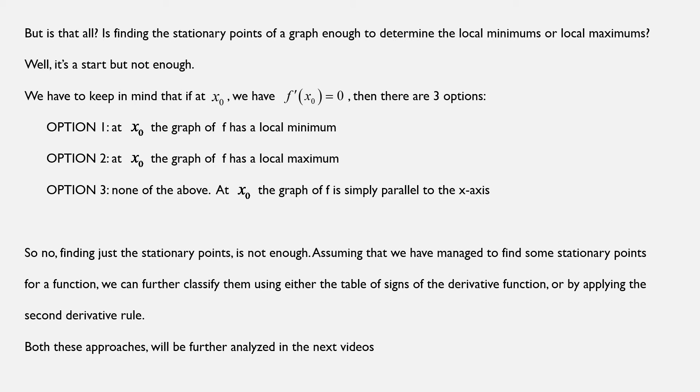But is that all? Is finding the stationary points of a graph enough to determine the local minimums or local maximums? Well, it's a start, but not enough. We have to keep in mind that if at x₀ we have f'(x₀) equals 0, then there are actually three options. Option number one: At x₀, the graph of f has a local minimum. Option number two: At x₀, the graph of f has a local maximum. And option number three: None of the above. At x₀, the graph of f is simply parallel to the x-axis.